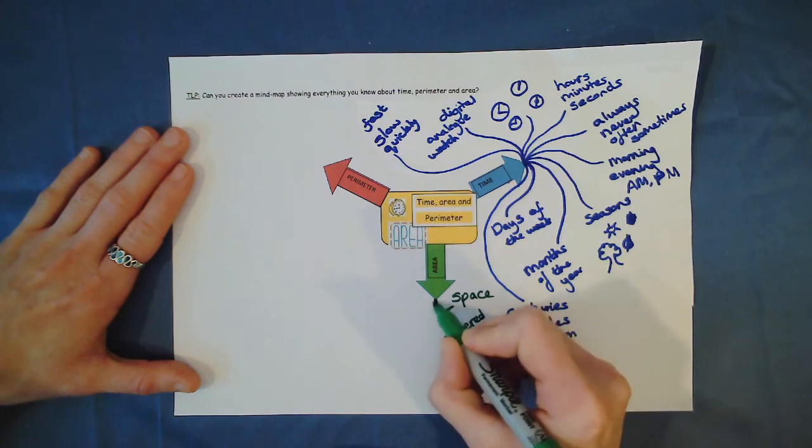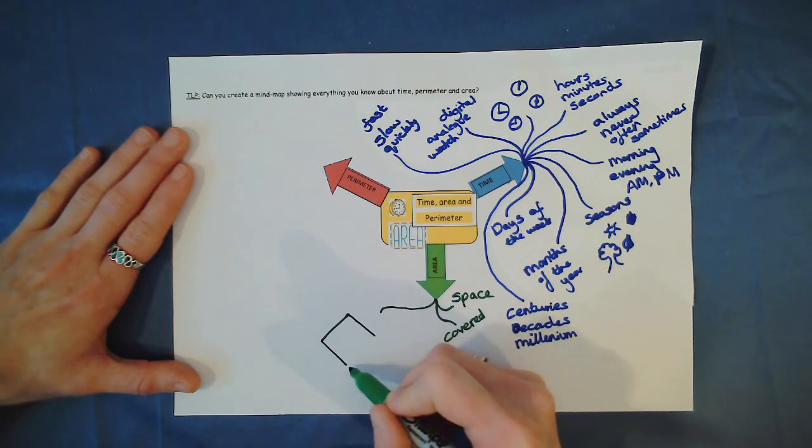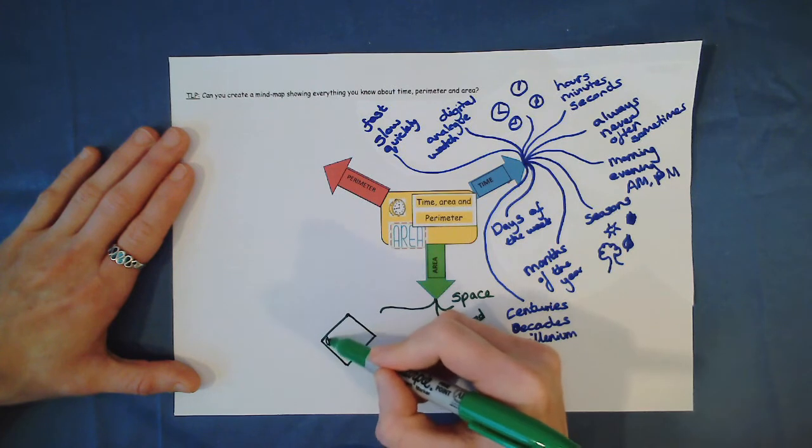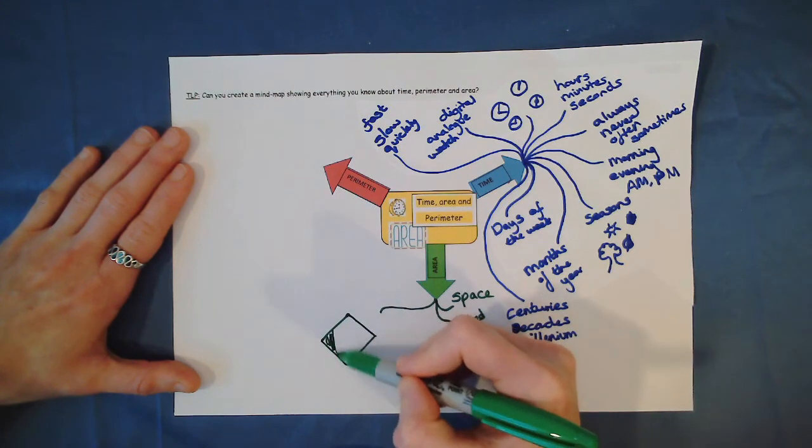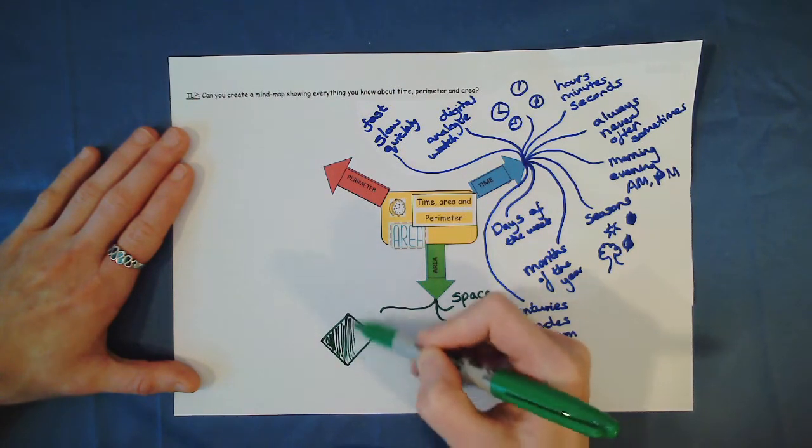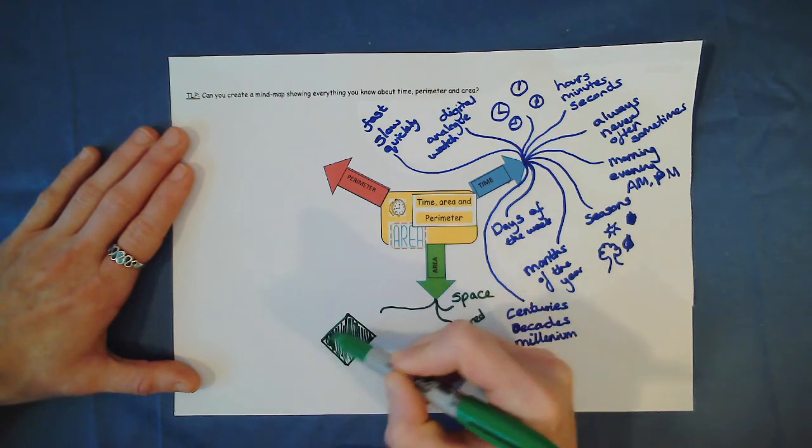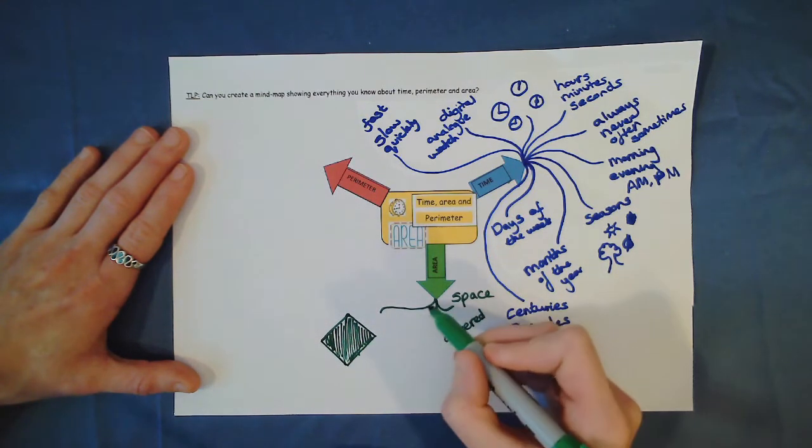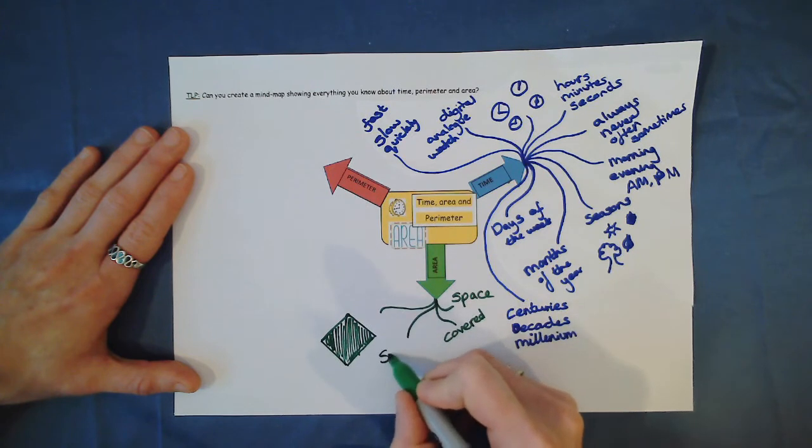So I suppose we could draw visual representation, a bit like this, where we colour in all of this and this represents the area. All of this that's coloured would be the area. So we could call it surface area.